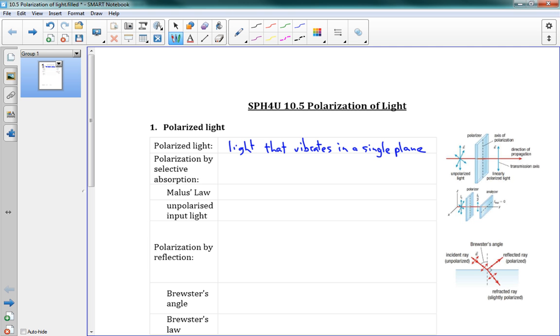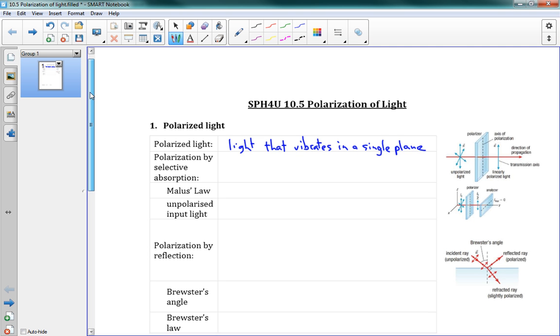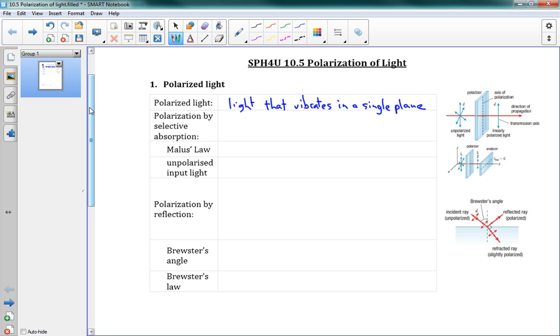On the last lesson, we were talking about how light is made up of two pieces. It's made up of the electric field and the magnetic field. And those two fields are always perpendicular to each other. And they're also perpendicular to the direction of travel.